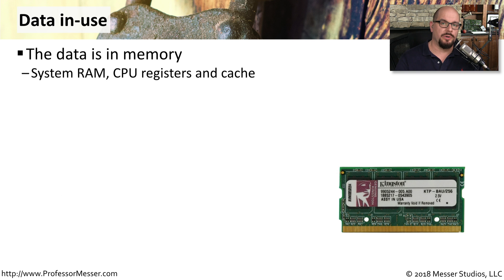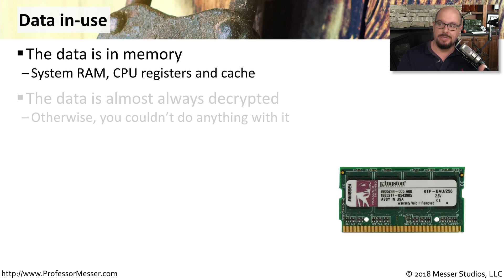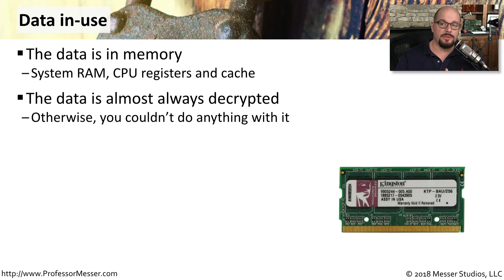When data is stored in a storage device or when it's transported across the network, we're not able to take any action on that data. The part where the system is using that data is when it is in the memory of the system or in the CPU — this is data in use. This data is almost always in a decrypted form, because if it were encrypted, the CPU would not know what to do with it when it received it from memory.